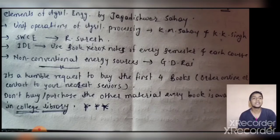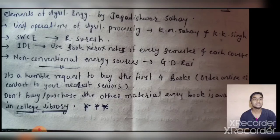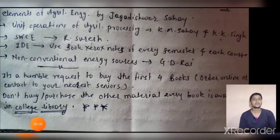For non-conventional energy sources, Jadia is one of the important books. It's a humble request to buy the first four books mentioned and don't purchase any other materials. Every book is easily available in your college library. These are the essential books which are useful for MCRE PGCET for Agriculture Engineering 2021.